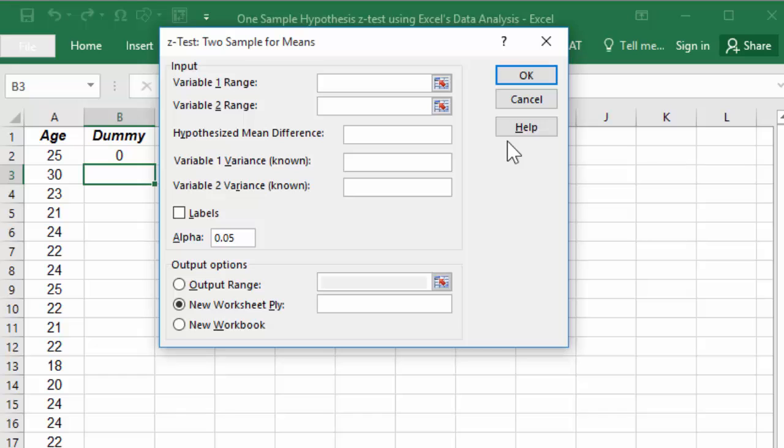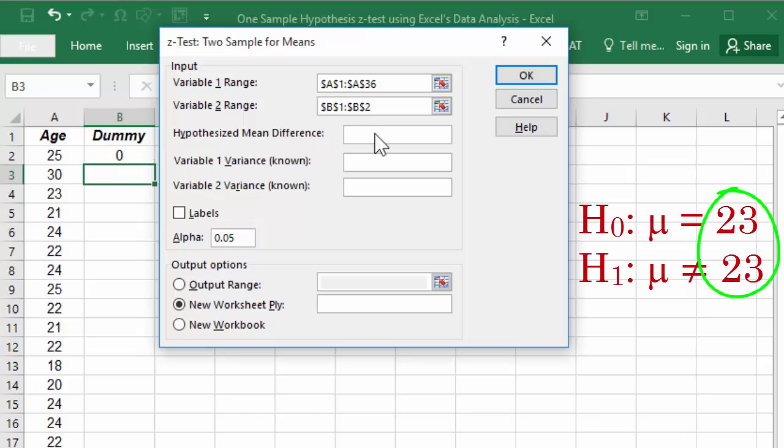For variable 1 range, select the actual data. And for variable 2 range, select the dummy data. For the hypothesized mean difference, input the parameter 23 from the hypothesis.